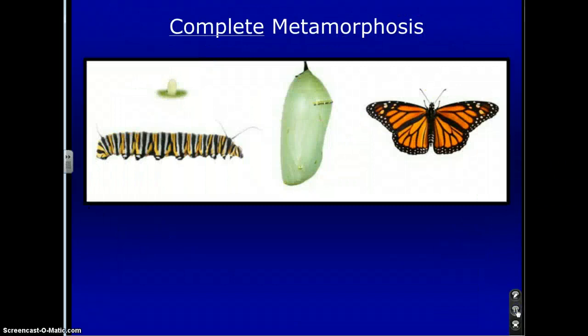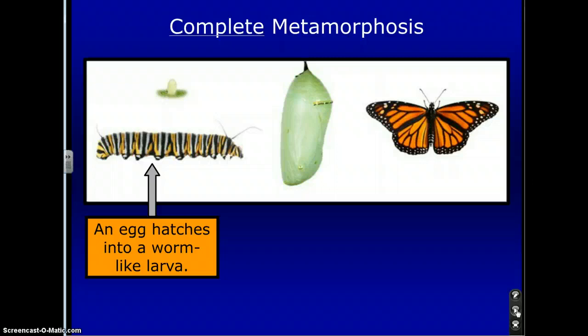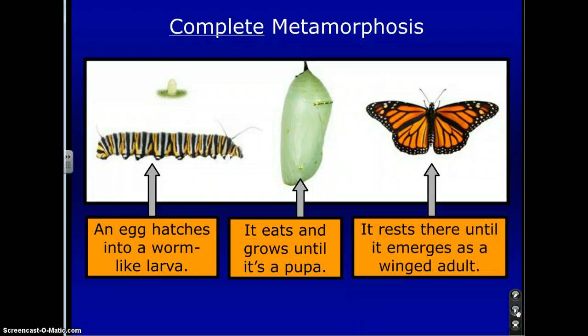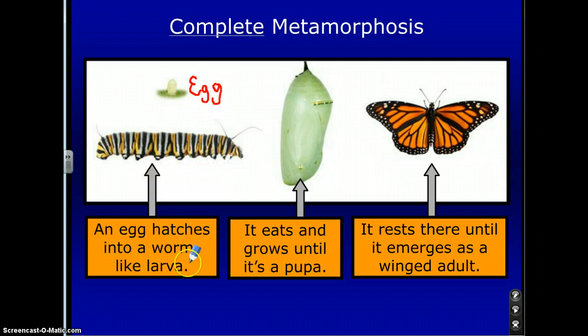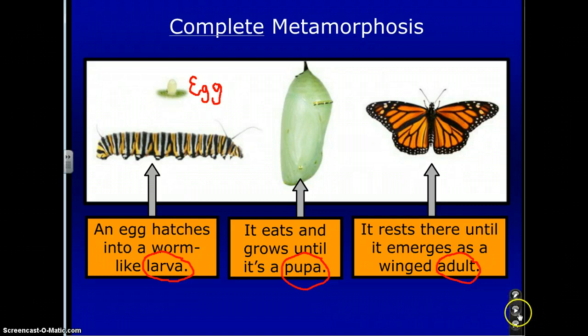In complete metamorphosis, an egg hatches into a worm-like larva. It eats and grows until it becomes what we call a pupa, and it rests there until it emerges as a winged adult. You'll need to be able to label these on a diagram tomorrow. The four key vocabulary words are egg, larva, pupa, and adult — make sure you understand these.